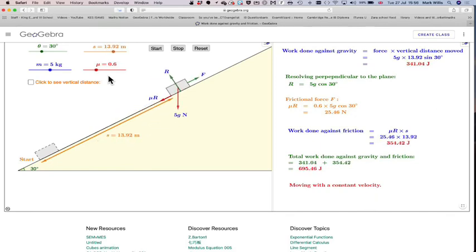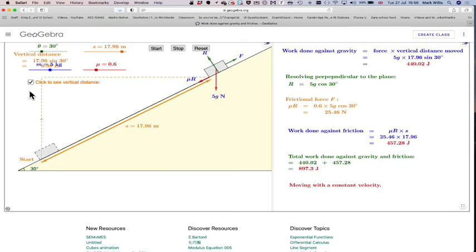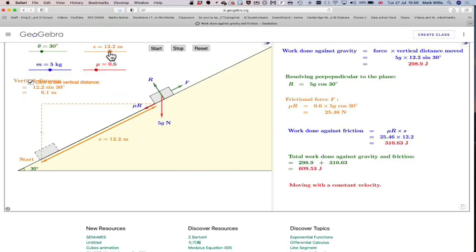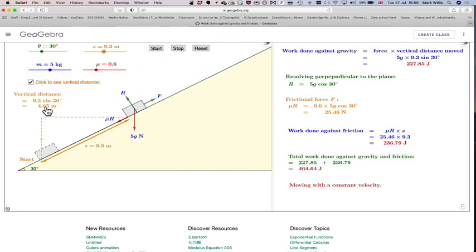Notice it actually has to move at a constant velocity. If you want to check the vertical distance as it moves up you can see that as well. And it will actually display it. If we bring it back down a bit so we can actually see it, we can see that at this point here has done 465 joules.